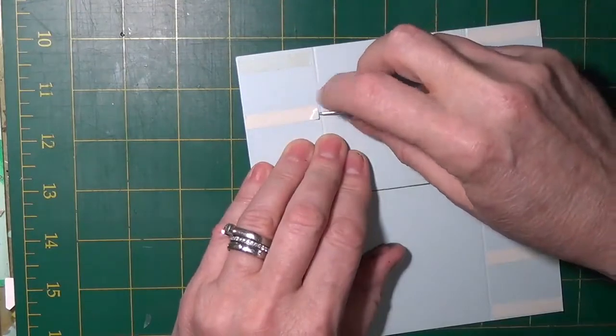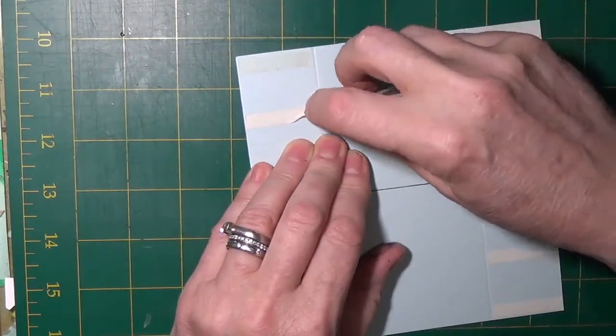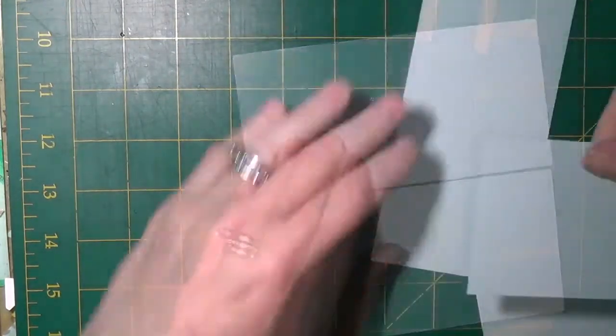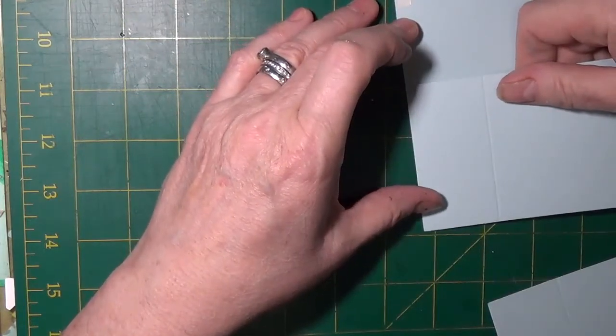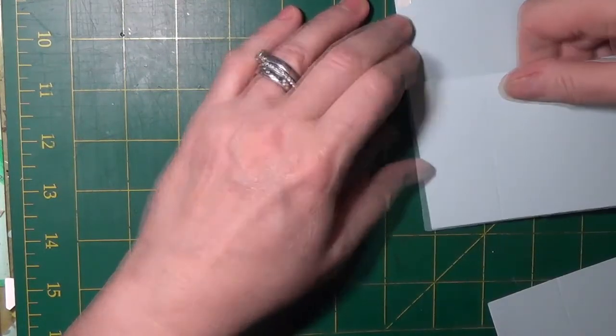You remove the score tape or double-sided adhesive tape and then you take your other piece and you line up the corners.